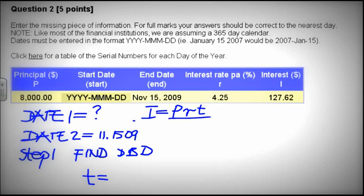So from here, T. Dividing both sides by P times R, P times R cancels.